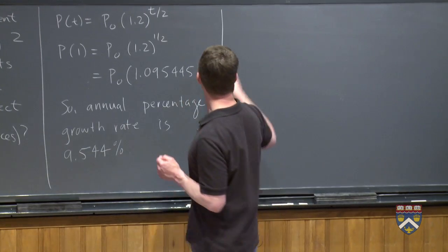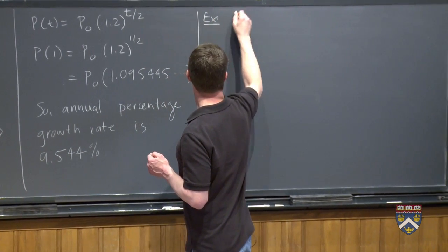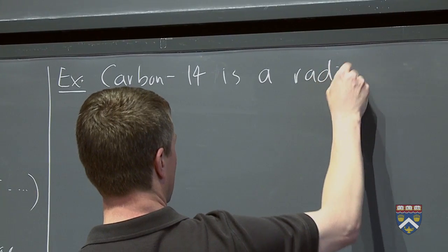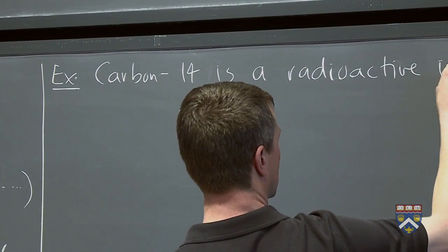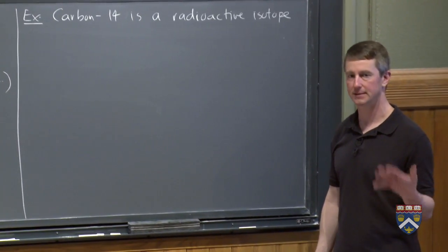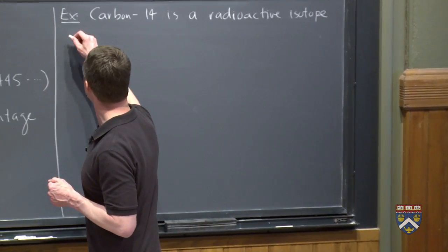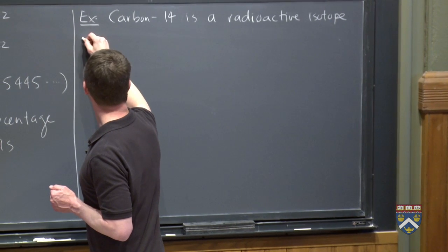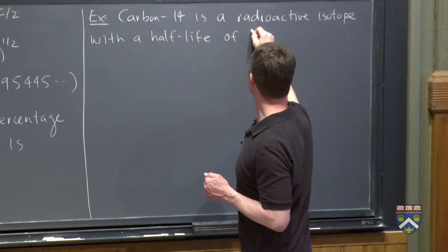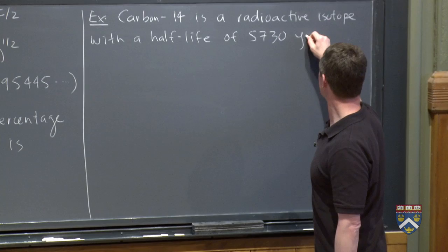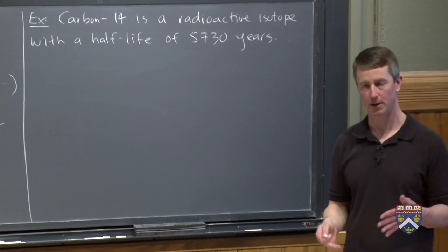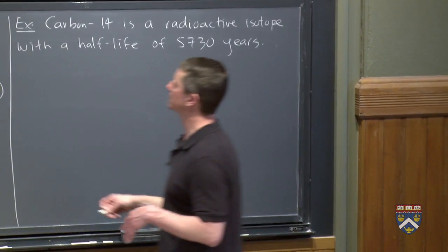One more example. We're going to do one with exponential decay. So carbon-14, you've probably heard of. That's a radioactive isotope. And people use it to date certain types of substances to figure out how old something is because these radioactive isotopes have what's called a half-life. So carbon-14 is a radioactive isotope with a half-life of 5,730 years. Meaning that every 5,730 years, you lose half of what you had at the start of the 5,730 years.